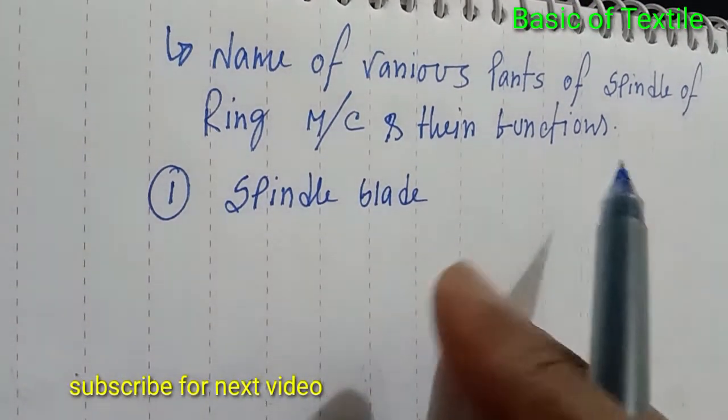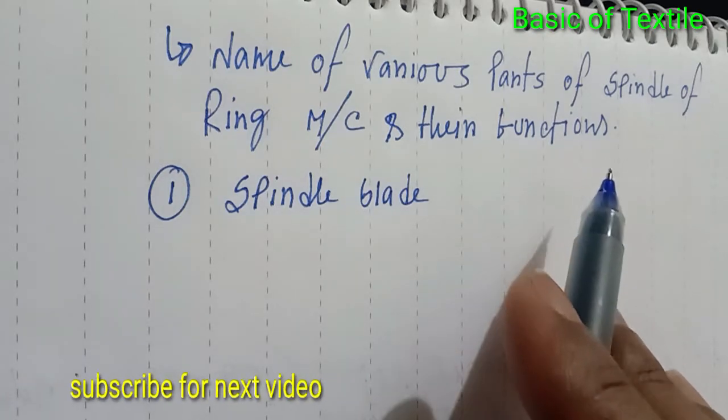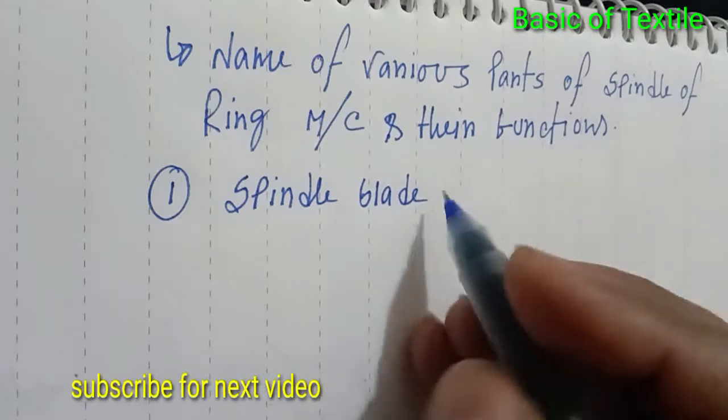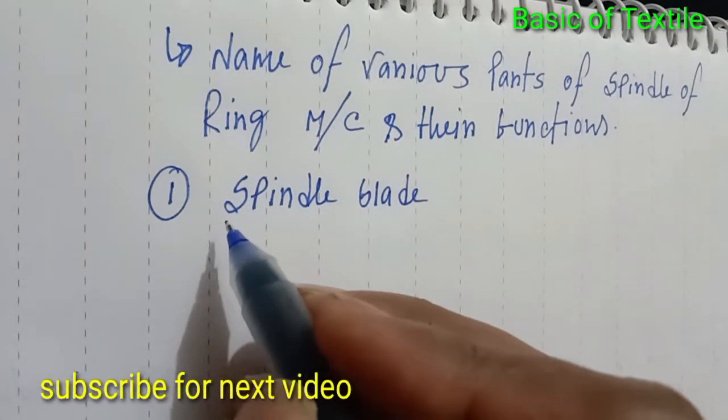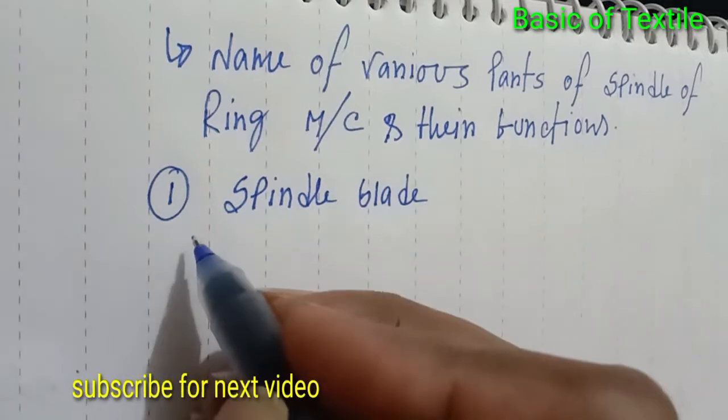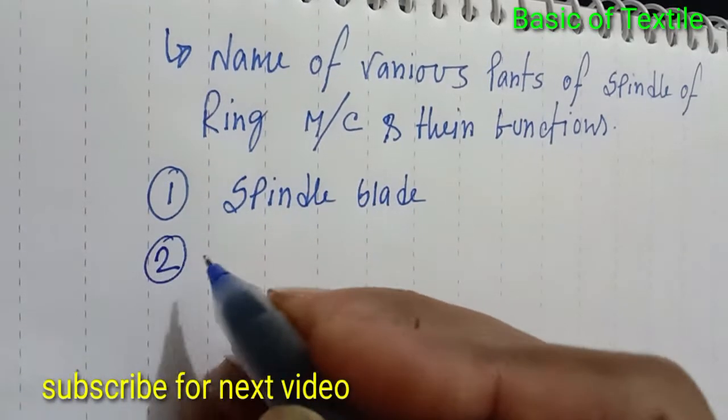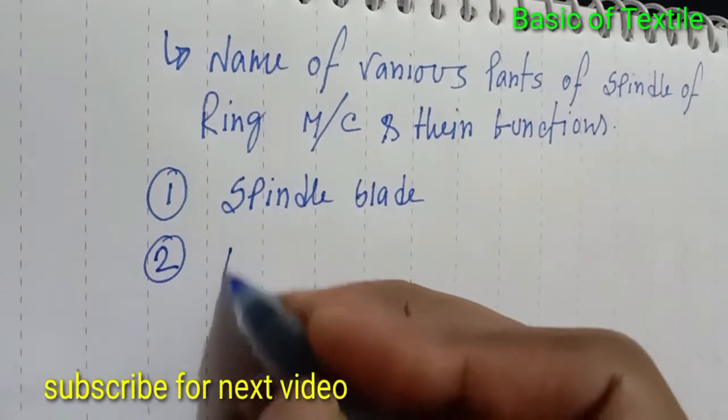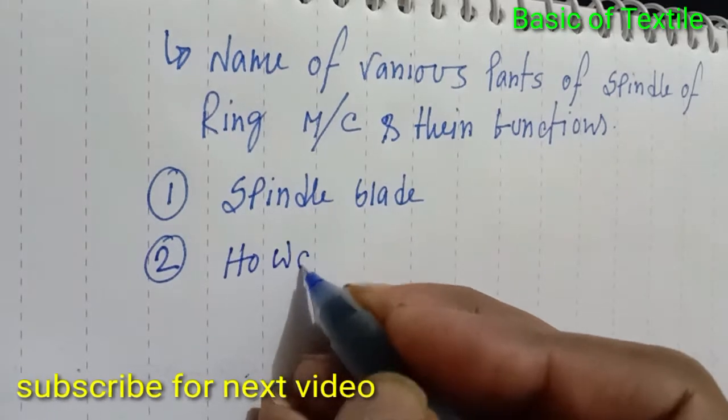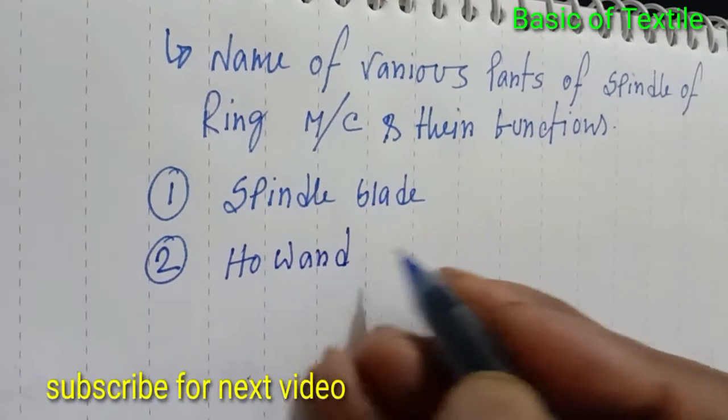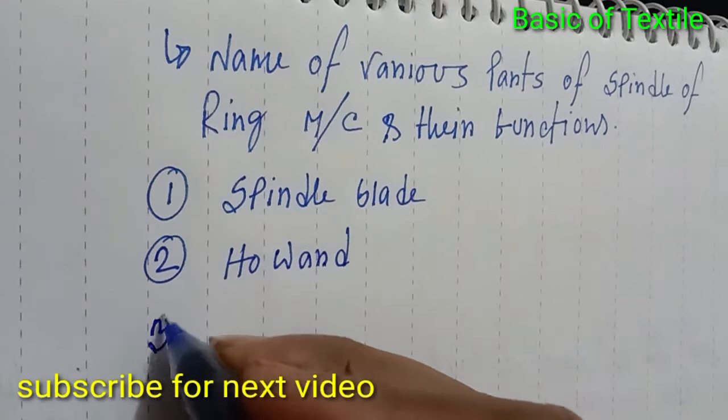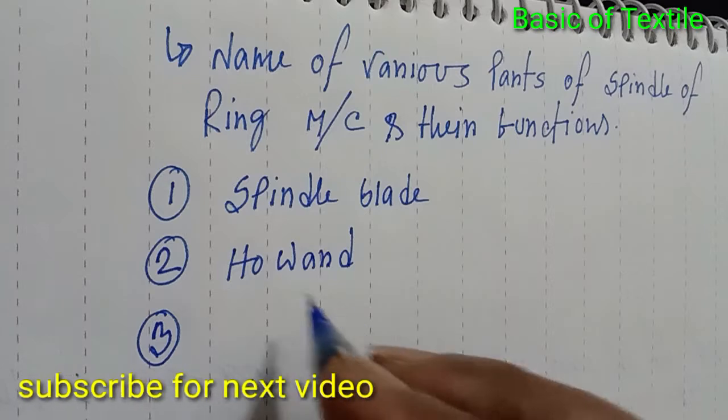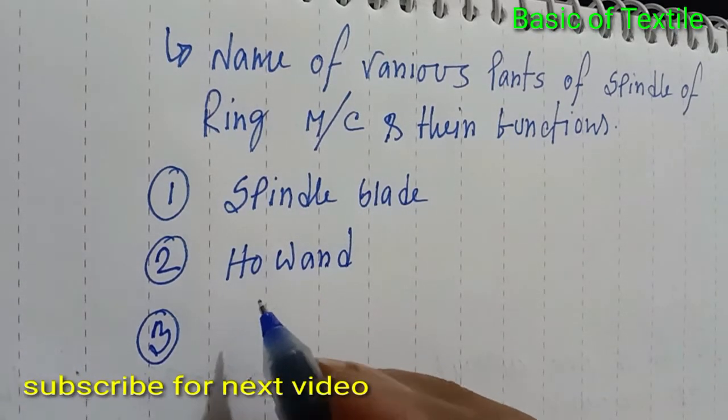The parts of the spindle are: number one - spindle blade, number two - wharve, number three - shoulder.